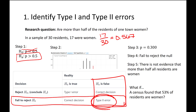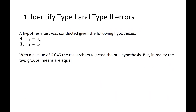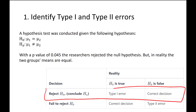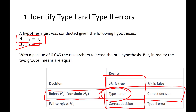Here's another example. A hypothesis test was conducted with the null hypothesis that the mean of group 1 equals the mean of group 2, and the alternative that they are not equal. With a p-value of 0.045, the researchers rejected the null hypothesis. But in reality, the two group means are equal — so in reality the null hypothesis is true. They made a type 1 error.